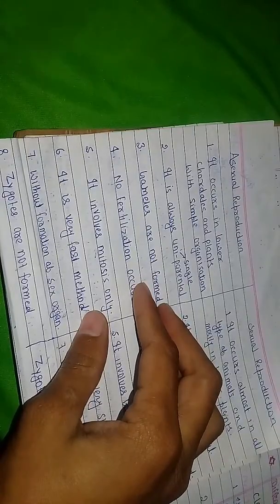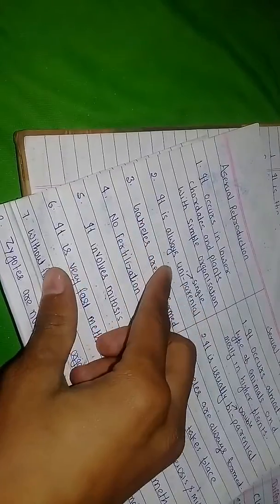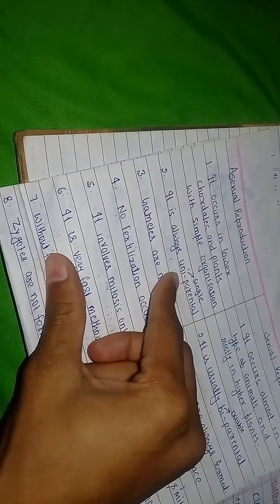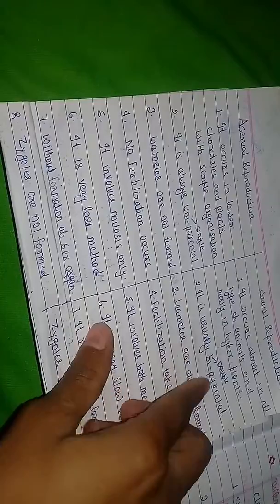In asexual reproduction, that matter was negative, and in sexual reproduction, that matter was positive. So the second point is: it is always uniparental, meaning asexual reproduction always has a single parent. And the second one is sexual reproduction. It is usually biparental.